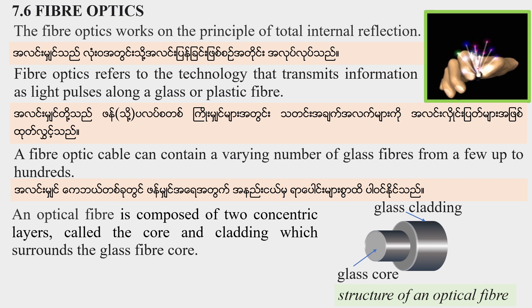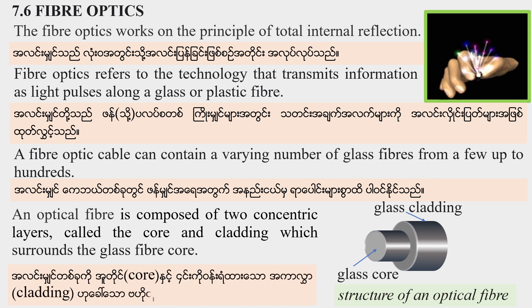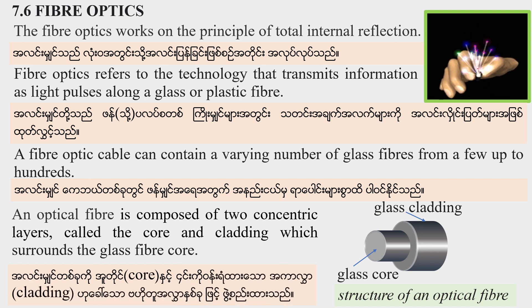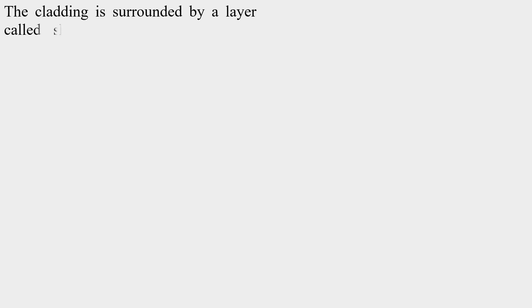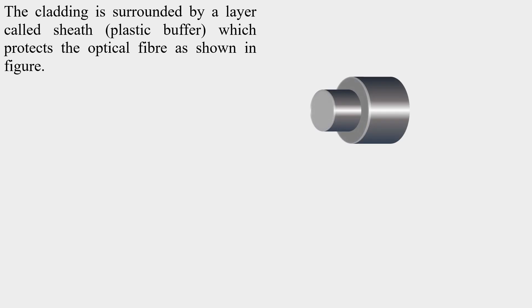The glass cladding is represented by a layer called the steel shield, which protects the optical fiber as shown in the figure.